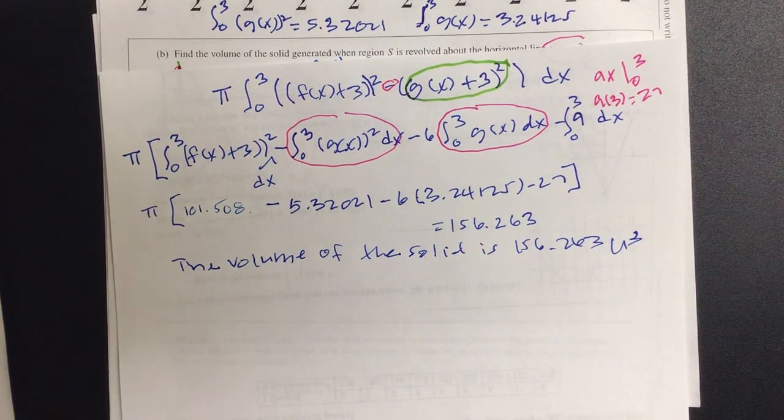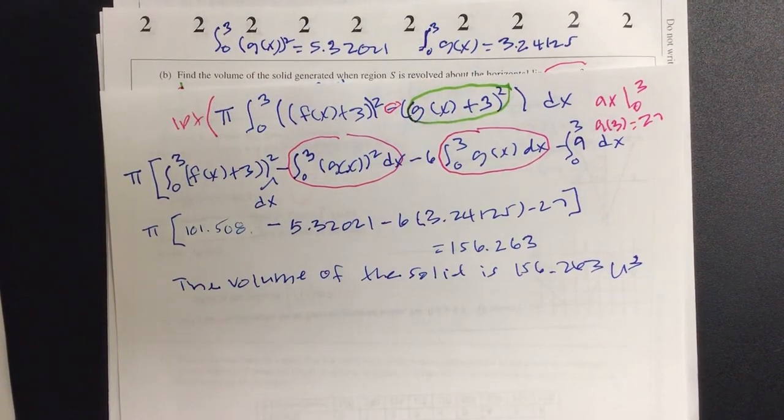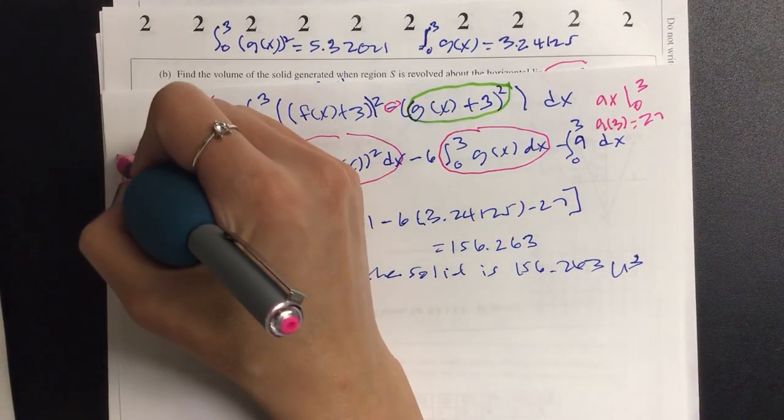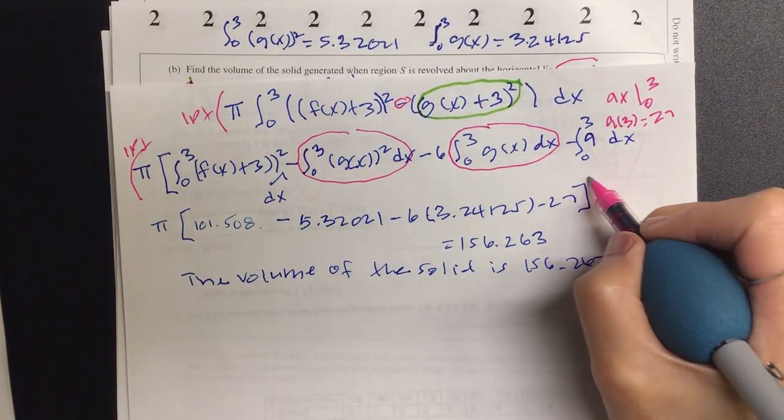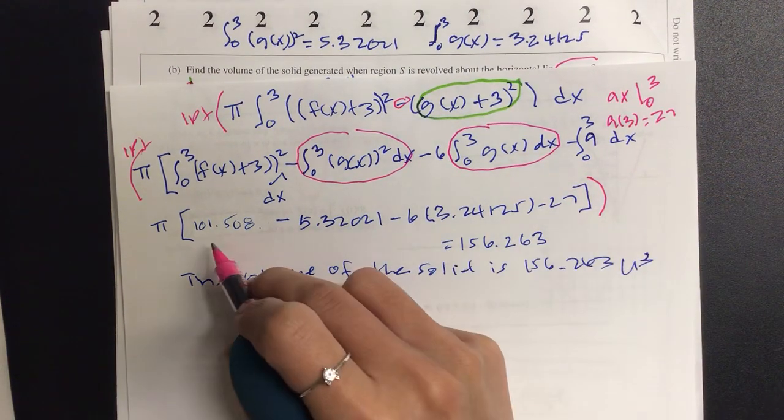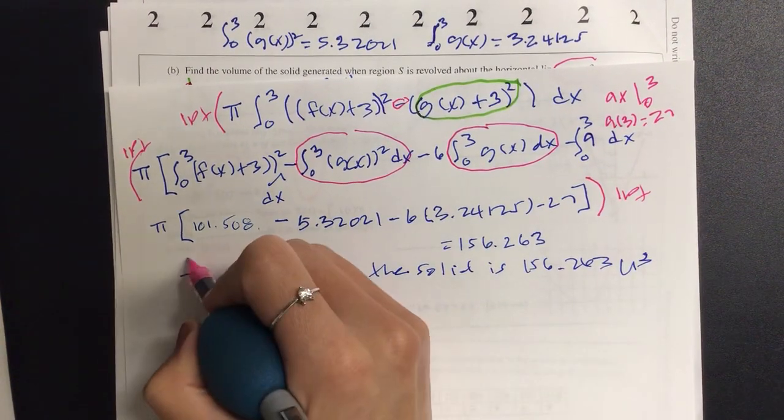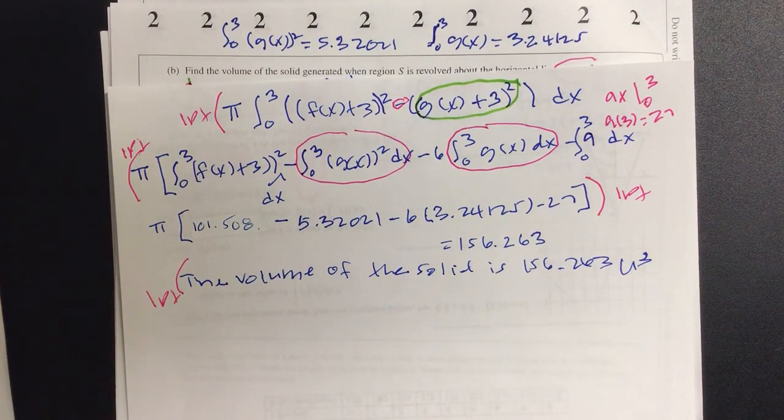So let's see where the partial credits are coming from. This part, one point knowing the integral being separated and also the g part, g(x), that's another point. And then having the correct number when you're plugging in into the f(x) and so on is going to give you another point, and your final sentence, last point. That should be four points total.